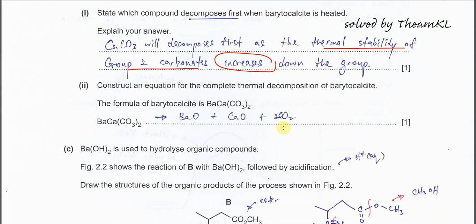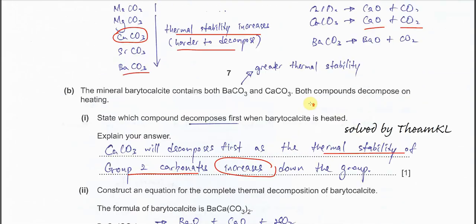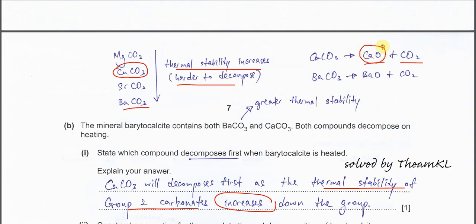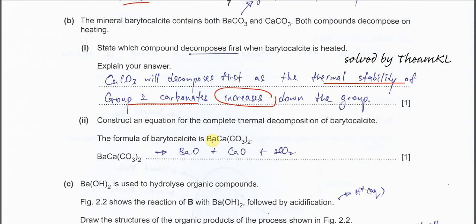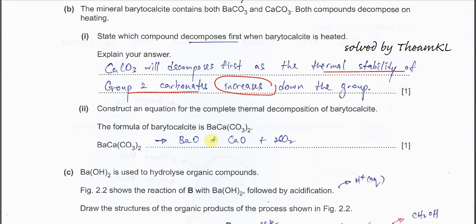Part B2: construct an equation for the complete thermal decomposition of baritocalcite. The compound contains both barium carbonate and calcium carbonate — two carbonates in total. Both carbonates will form their respective oxides and CO₂. So the products are barium oxide, calcium oxide, and two moles of CO₂.